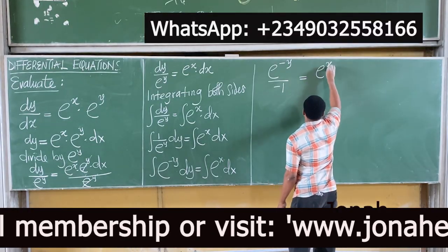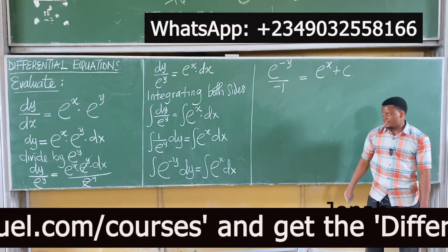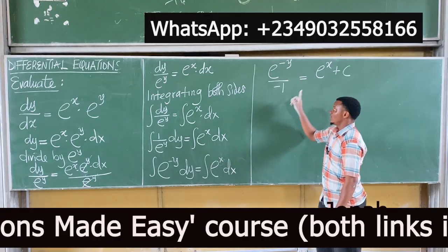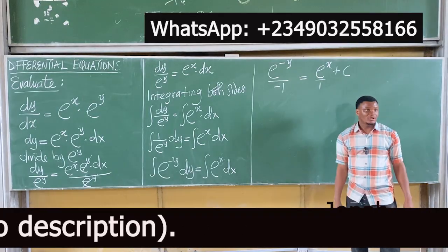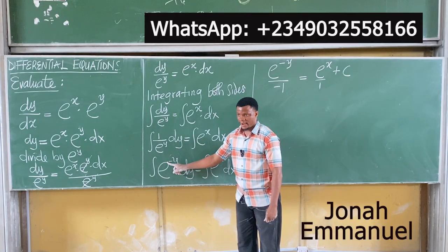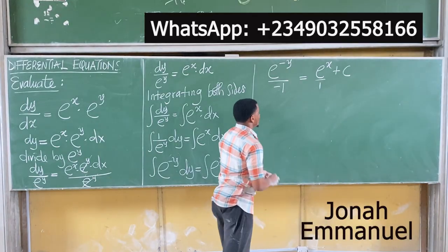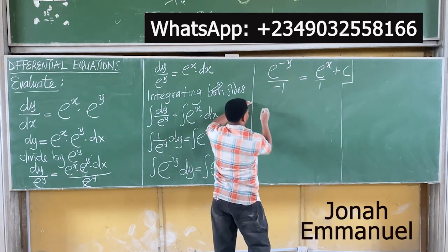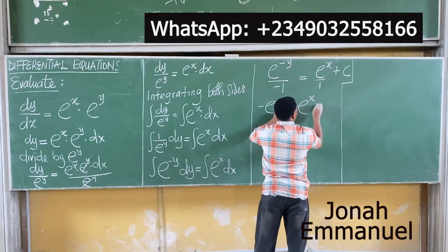So we have -e^(-y) equals e^x plus c. We want to find y, not -e^(-y). Multiply through by -1: e^(-y) equals -e^x minus c. The reason the dy and dx work here is because you're integrating y with respect to y on the left, and x with respect to x on the right — that's why both integrals have answers.